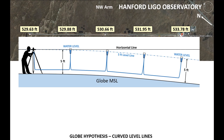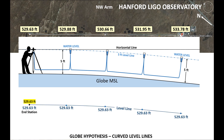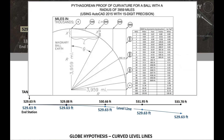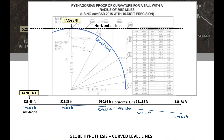So let's compare these elevations to the globe hypothesis. Since 529.63 feet is the smallest elevation, I am going to use that as my curved level line. I'll add the concrete slab, which is the equivalent of that horizontal line tangent to the end station, and finally I'll add the other four elevations. Earth curvature calculations are based on the Pythagorean theorem, requiring a horizontal line tangent to the surface of the earth — the equivalent of a level line — and the curvature drop is measured from that horizontal line down to the level line. This is why I said these beam arm slabs are horizontal and tangent to the end station.